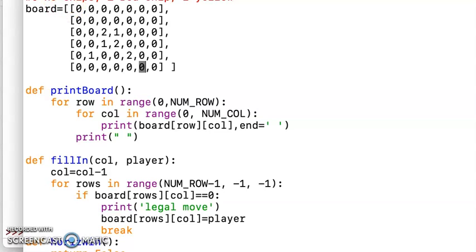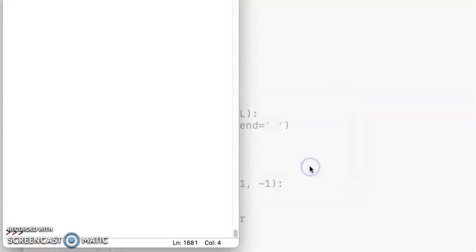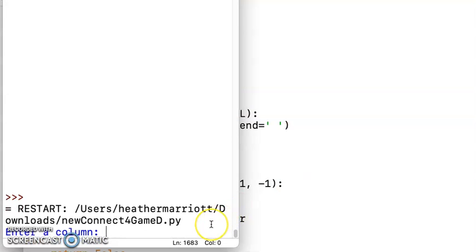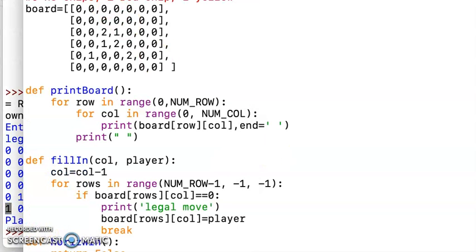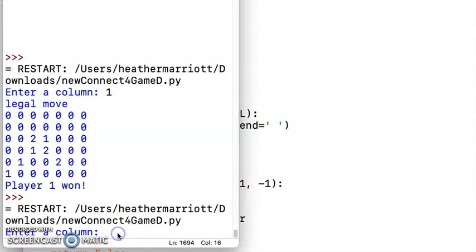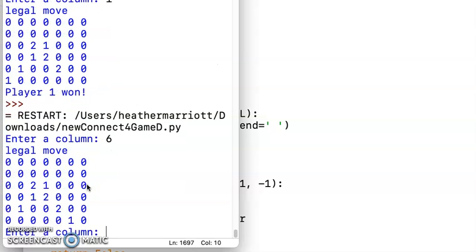So let me do run, run module on this and we're on player one. So I'm going to say, I'm going to go in position number one and voila, it says player one won. When I added that in, let's run it again and make sure the diagonals the other way work. And this time I wanted to go position, let me see, zero, one, two, three, four, five, about position six is what I need.